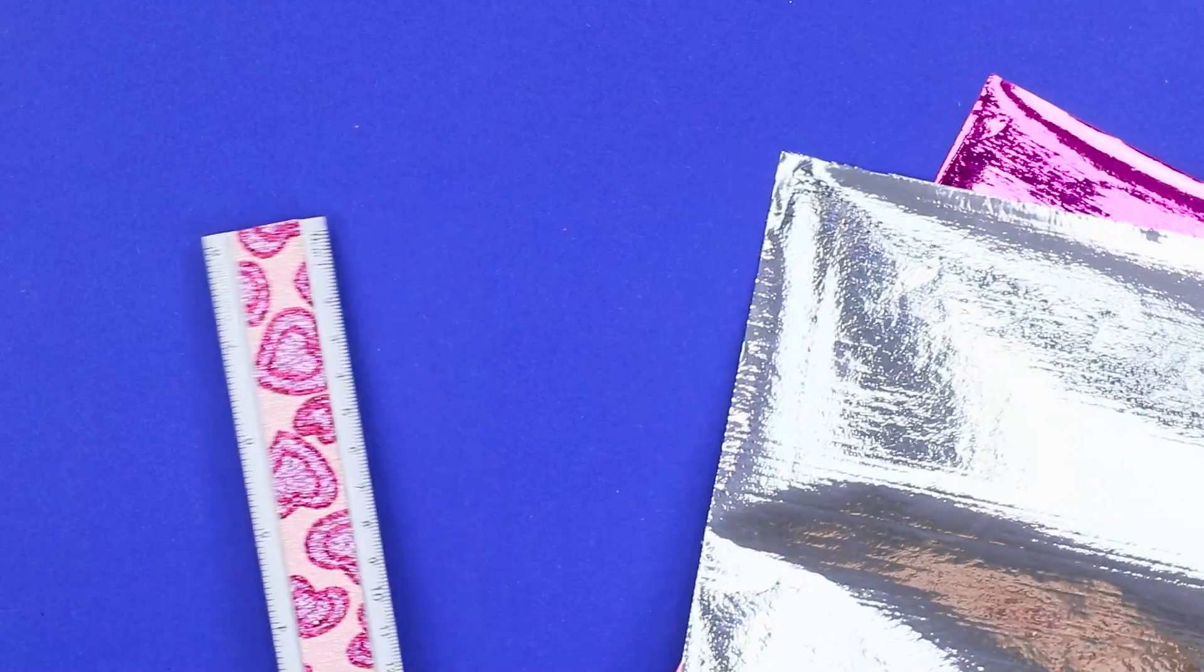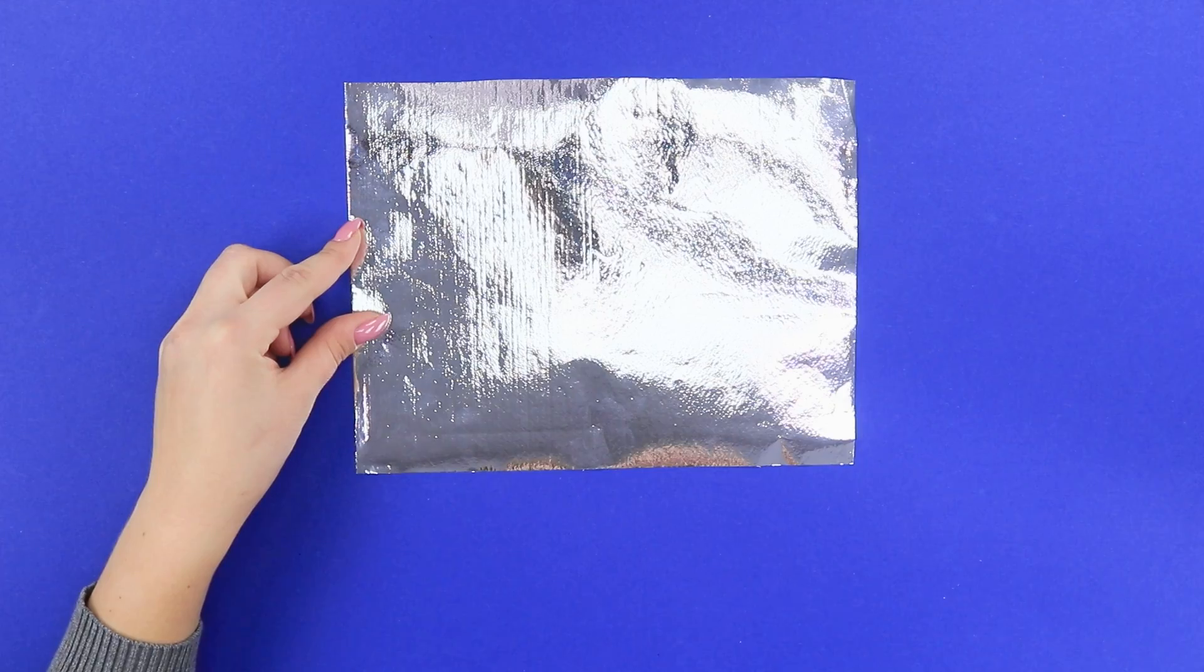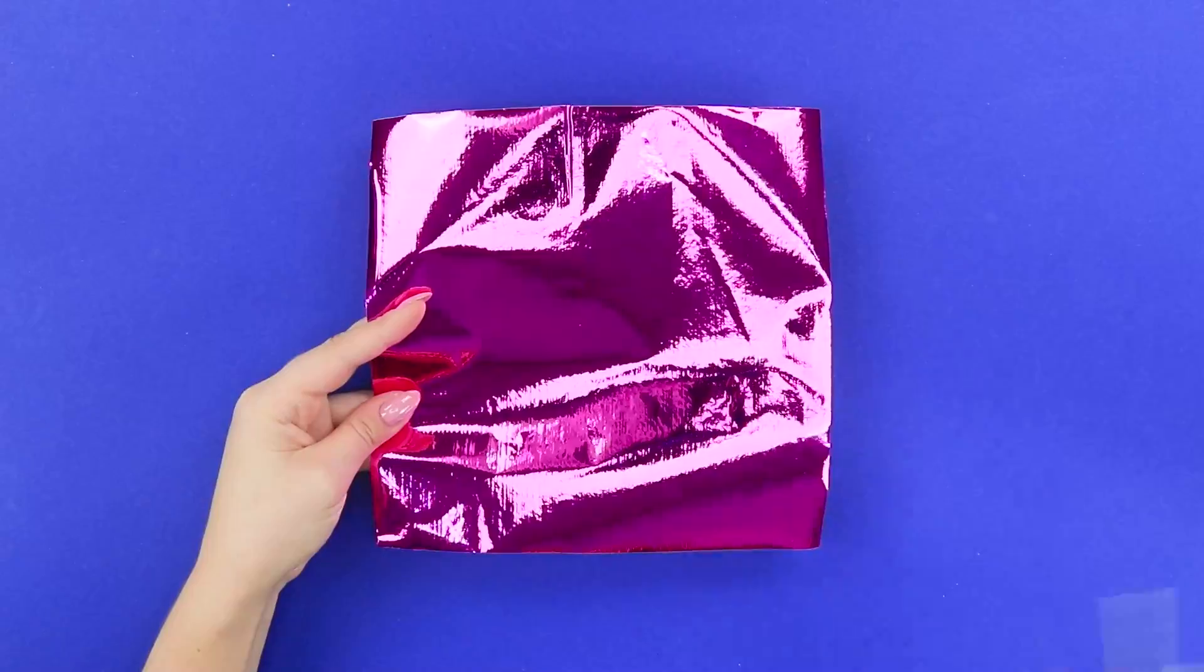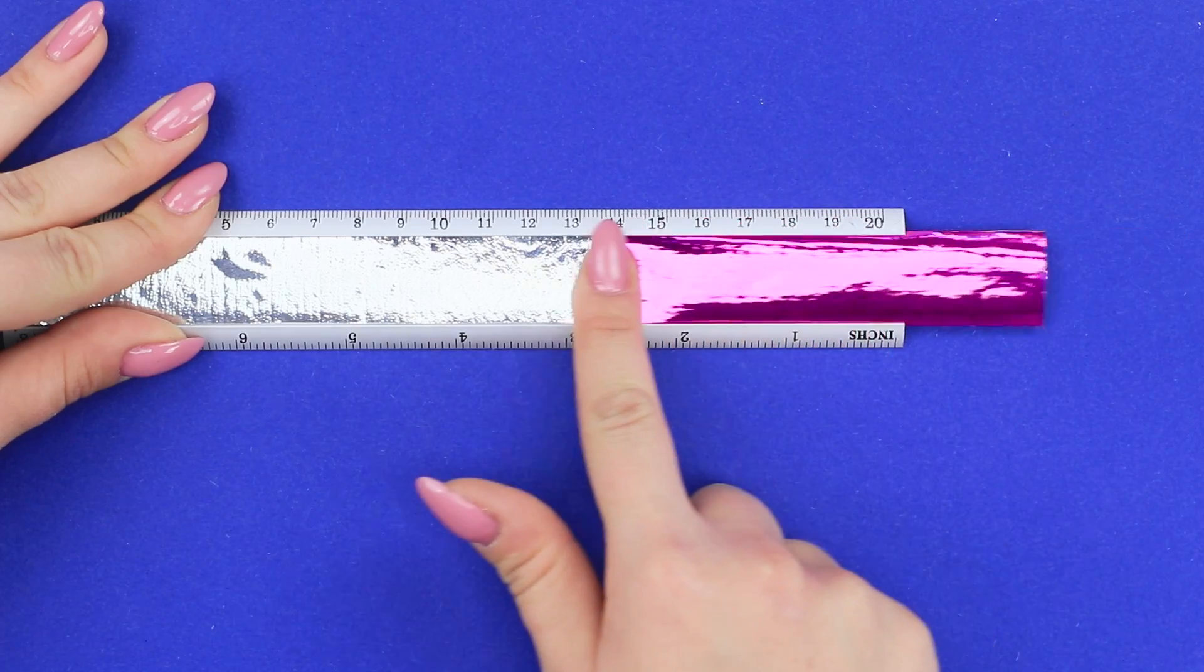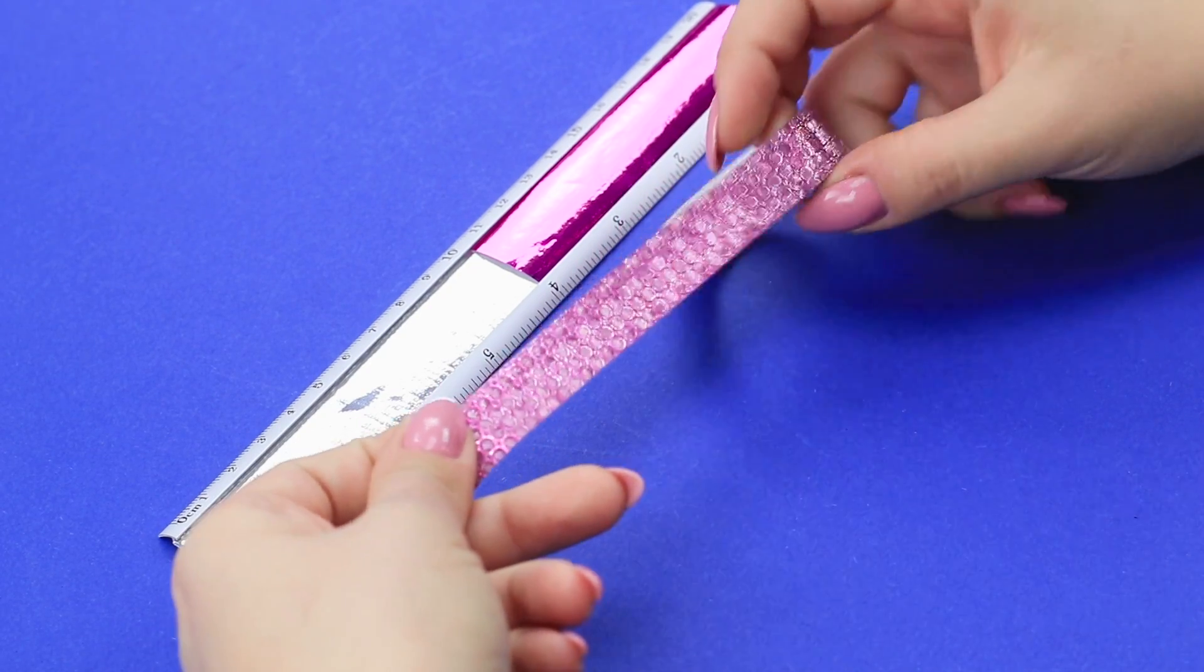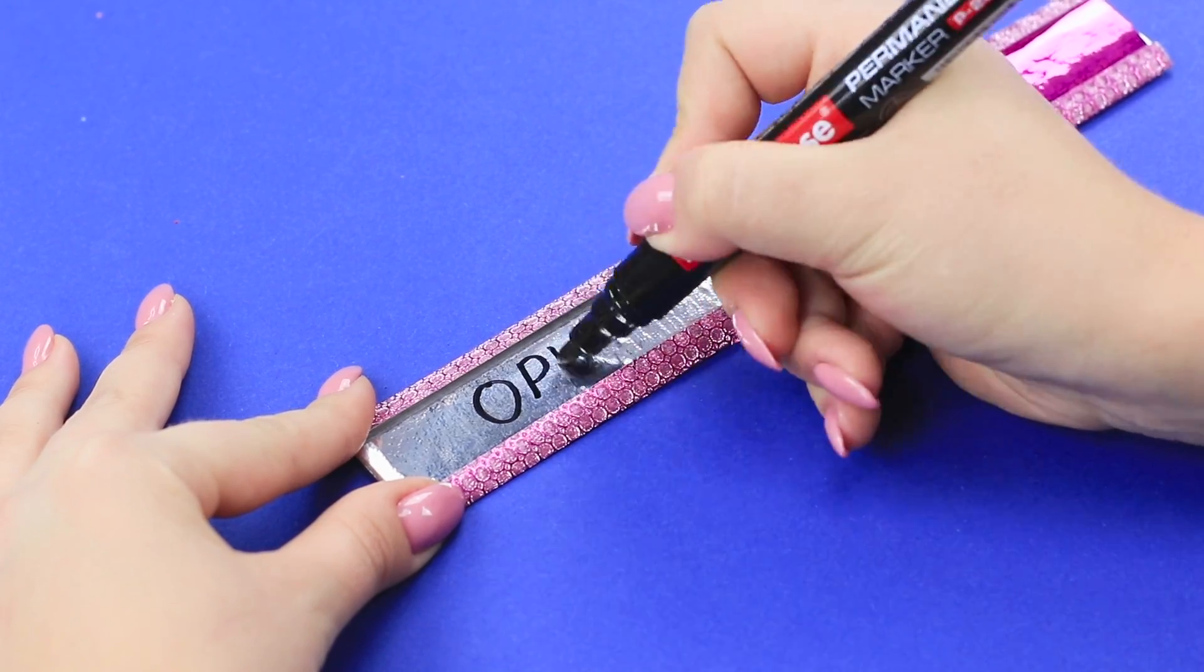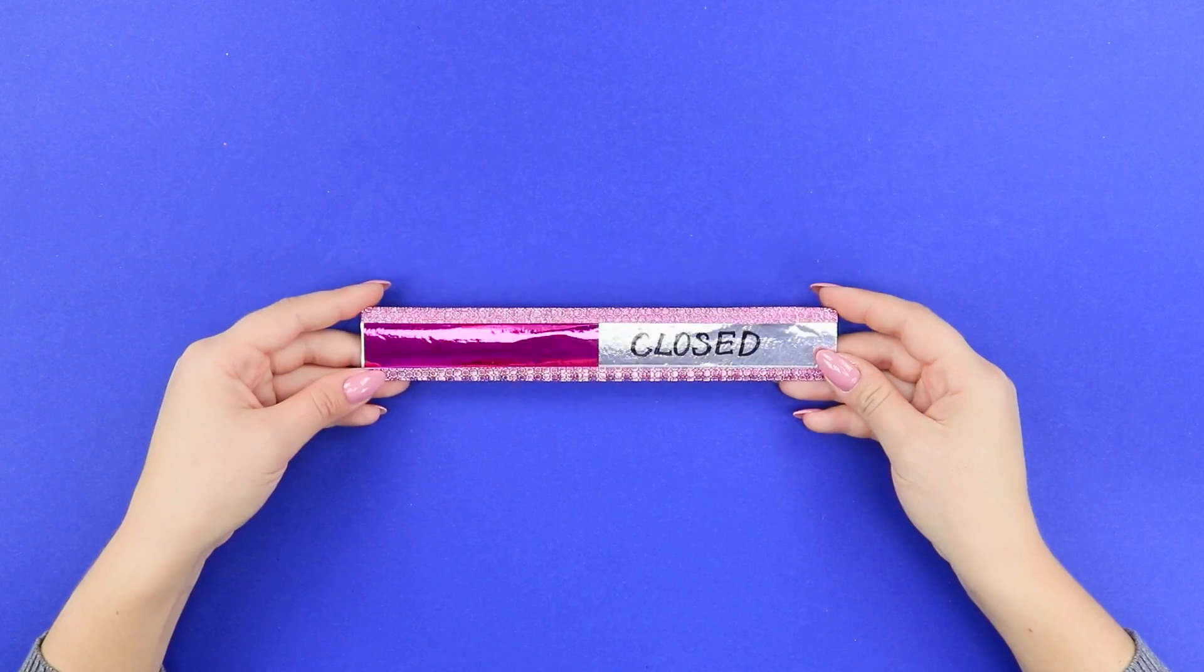And now take a ruler and colored foil. Remove the decor from the ruler. Cut out a strip the size of the ruler from gray foil and cut a shorter strip from pink foil. Insert the pieces of foil into the ruler. First the gray one, then the colored one. Glue decorative tape over the markings. Write open and closed with a permanent marker. The bathroom sign is ready!